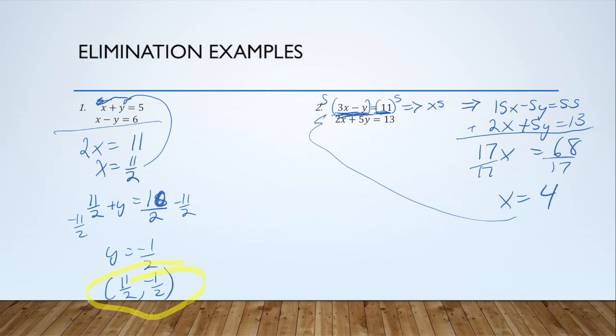Now I can substitute that back into either of my equations and solve for y. 3 times 4 minus y is 11. 12 minus y is 11. Subtract 12. Negative y is negative 1, so y equals 1. My solution is the ordered pair when x is 4, y is 1.